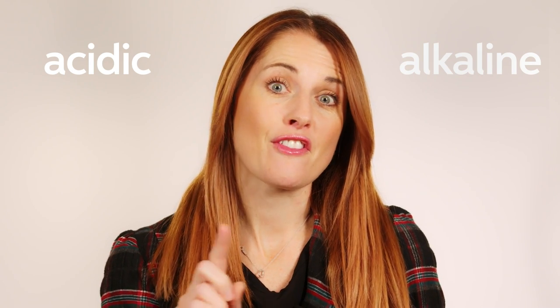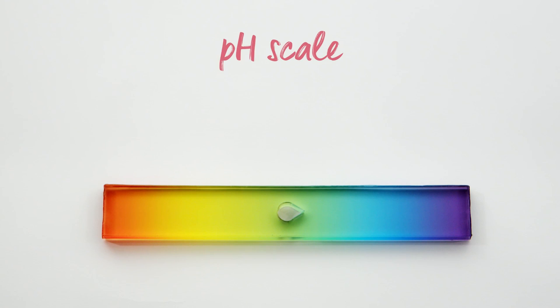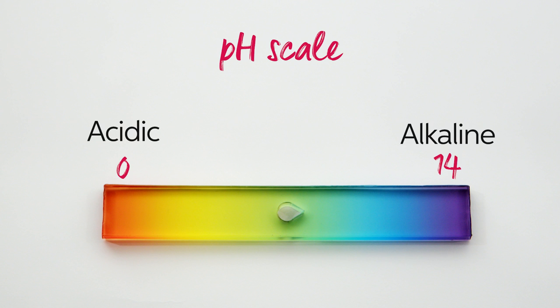But first let's recap. Here comes a quick overview of the pH scale. pH is measured on a scale with numbers ranging from 0 to 14. 7 is neutral, anything below 7 is acidic and anything above 7 is alkaline.